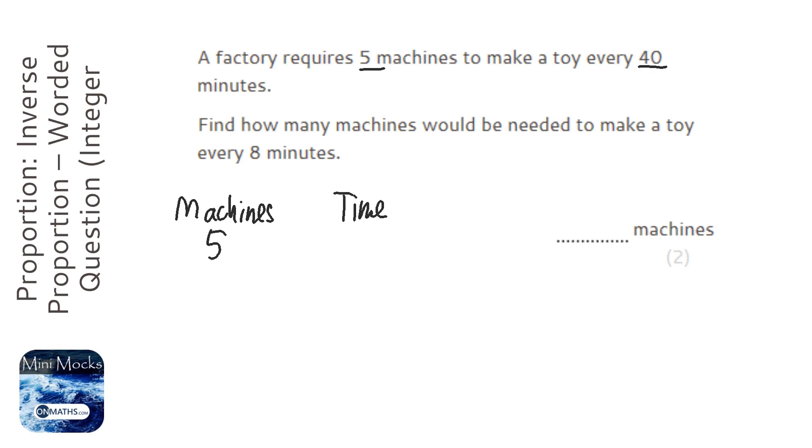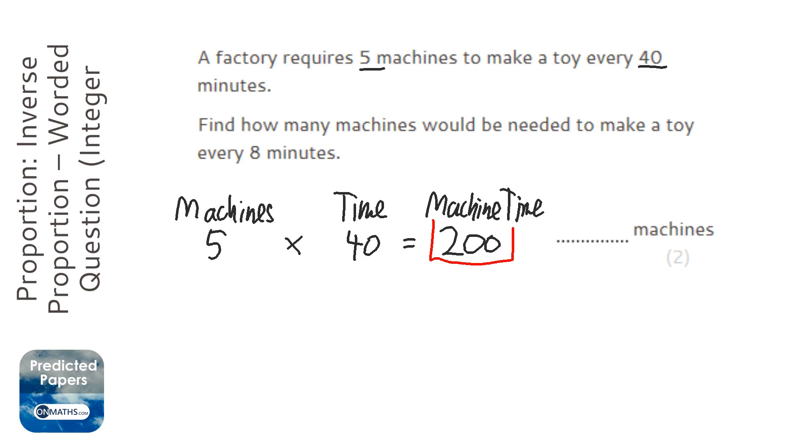We've got 5 machines and it takes 40 minutes. Then if we times those together we get something which I'm going to name machine time. Okay, I've just made that up. So 5 times 40 is 200. Now that 200 there is really special because that 200 must always be the same. The machine time must always be the same.